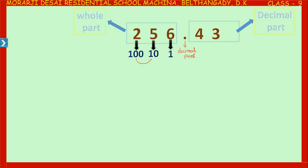Look at the place values. When you divide 100 by 10 you get 10; when you divide 10 by 10 you get 1. So what is the place value after the decimal point? When you divide 1 by 10 you get one-tenth; when you divide one-tenth by 10 you get one-hundredth. So the place values after the decimal point are one-tenth, one-hundredth, one-thousandth, one ten-thousandth, and so on. The first place is called the tenths place, and one-hundredth is called hundredths.